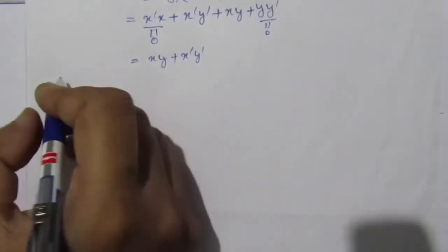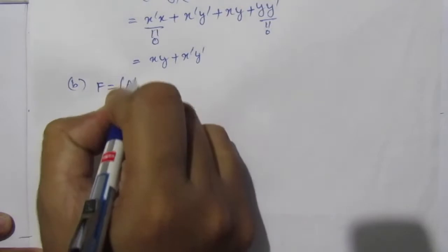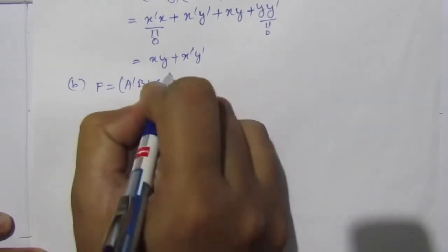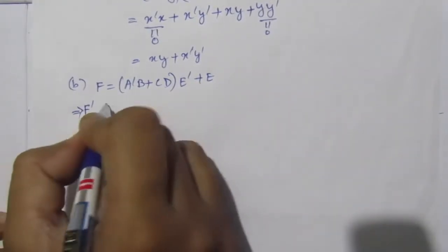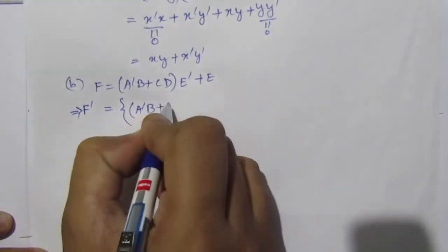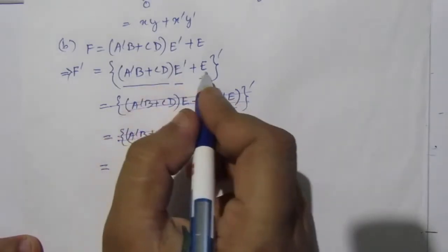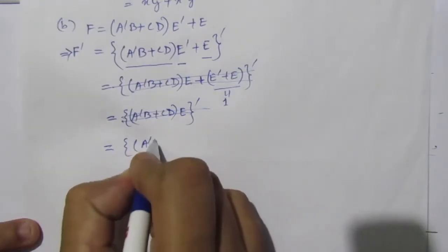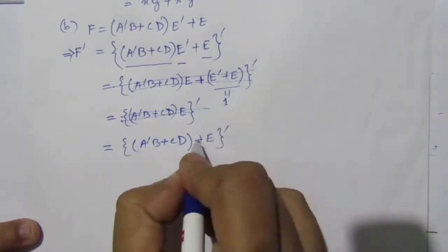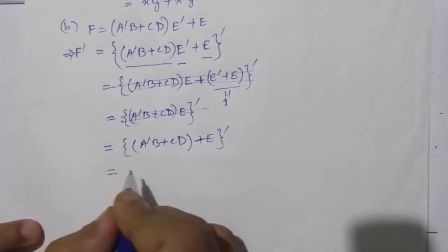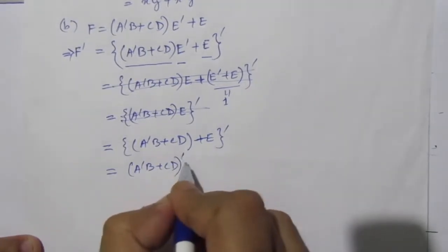Now we will solve the second part of the problem, B. We are given F equal to (A̅B plus CD) into (Ē plus E), all complemented. We can simplify this expression — since Ē plus E equals 1 — and rewrite it as A̅B plus CD plus E, whole bar. Using De Morgan's theorem, we get A̅B plus CD, whole bar, into E̅.